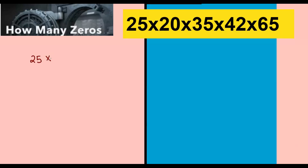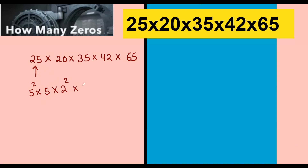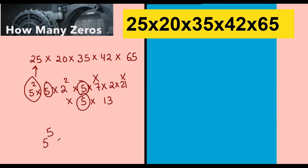Now: how many zeros in 25 × 20 × 35 × 42 × 65? We find the factors of 5. 25 is 5 squared. 20 is 5 × 2 squared. 35 is 5 × 7 — we are not concerned about 7. 42 is 2 × 21 — not concerned about 21. And 65 is 5 × 13. So total powers of 5: 2 + 1 + 1 + 1 = 5, giving 5 to the power 5. Powers of 2: 2 to the power 3. Whichever is less will be the number of trailing zeros. So number of trailing zeros is 3.